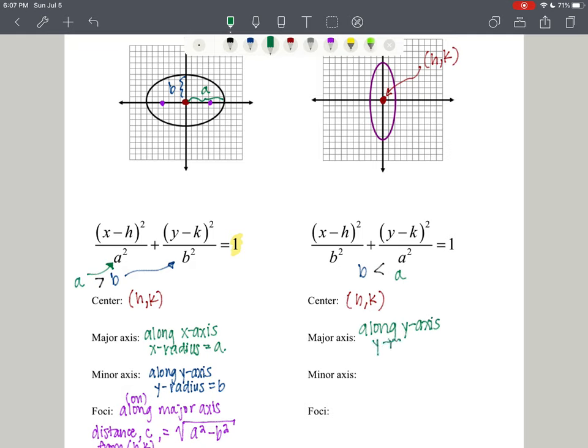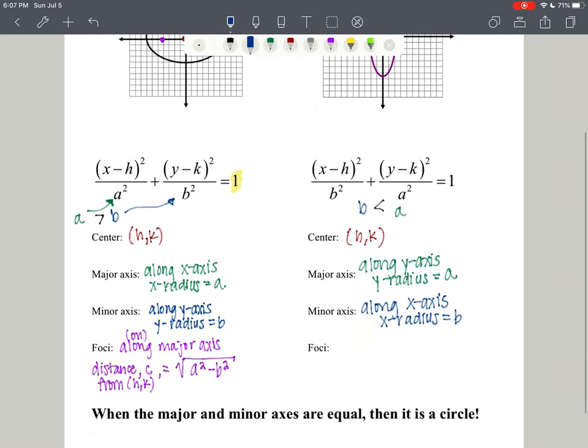I'll call that y-radius equal to a still. Then the minor axis in this case will be along the x-axis. I'll call that x-radius, which is equal to b. Then again, the foci is still the same value—it's a distance away from the center.